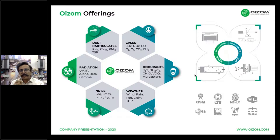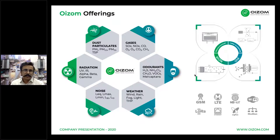Most odorants are measured using the PID sensor, where a photo ionization detector detects positive and negative ions. Dust particulates are measured using the laser scattering principle.